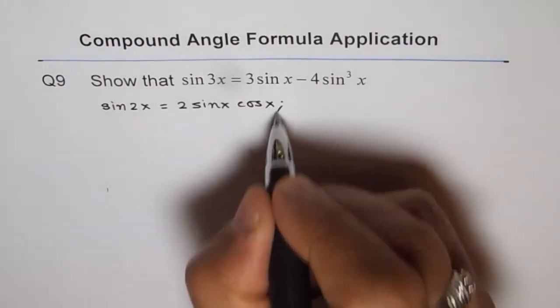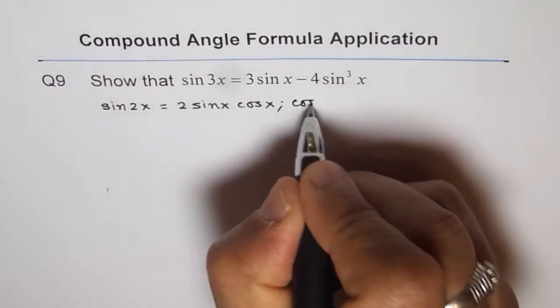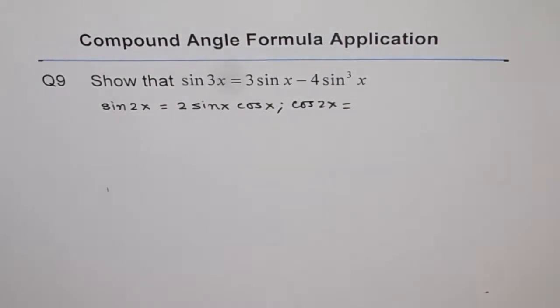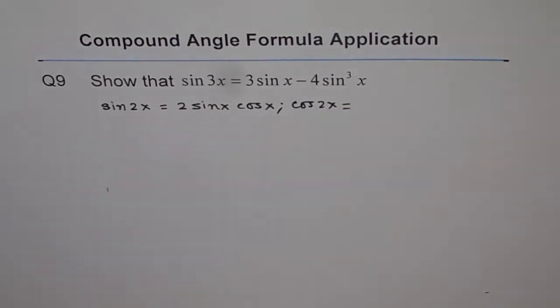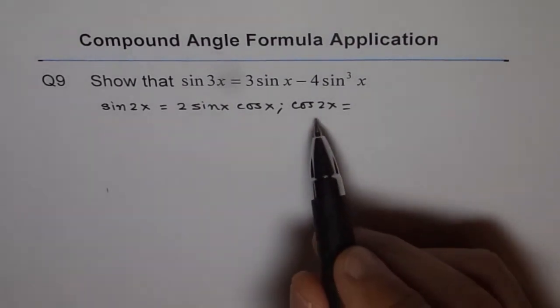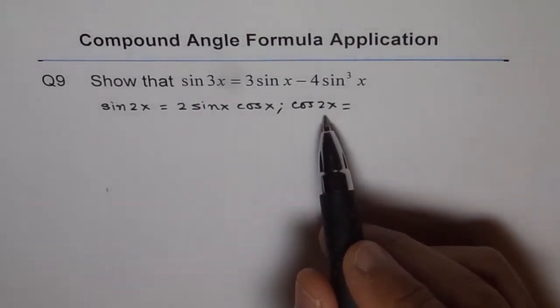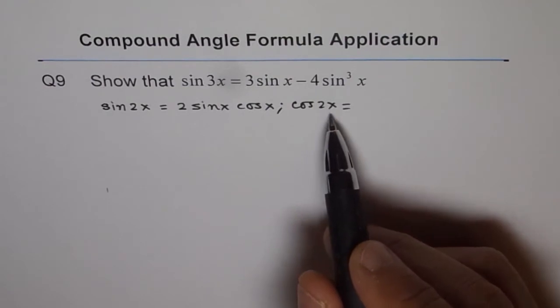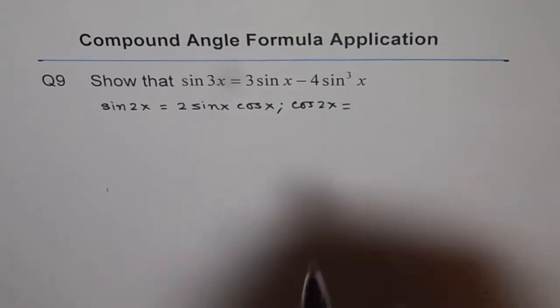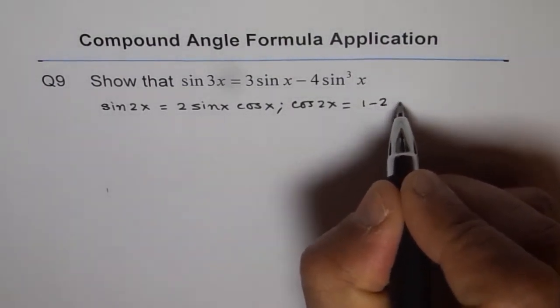Now, what is cos 2x formula? Cos 2x formula has three things in it. Well, there are three formulas for cos 2x. One is cos square x minus sine square x. The other one is 2 cos square x minus 1. And the third one is 1 minus 2 sine square x.